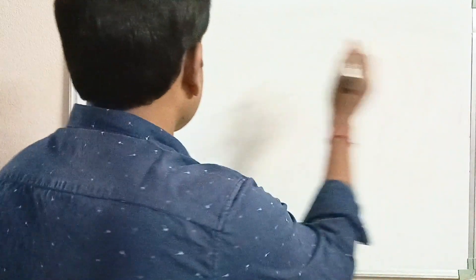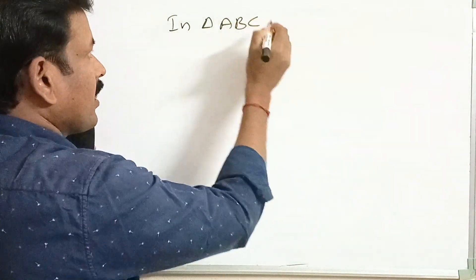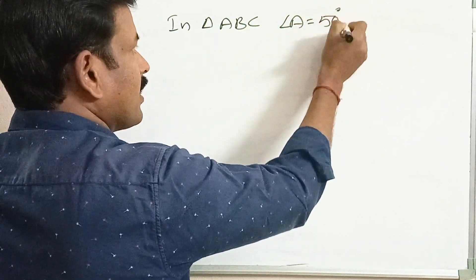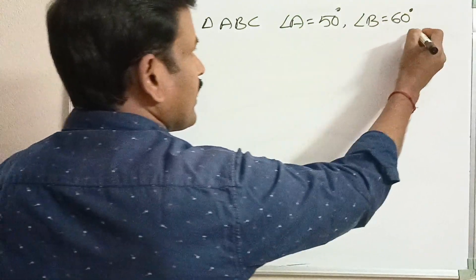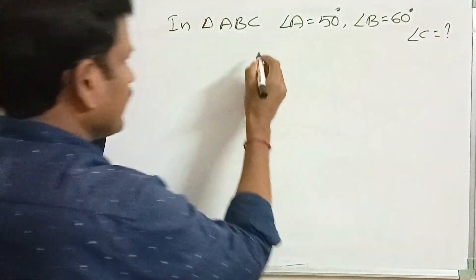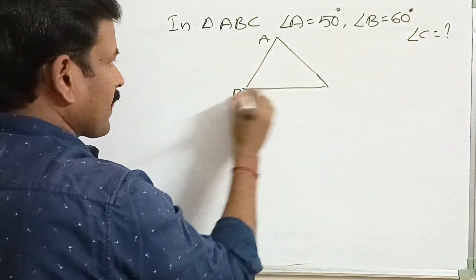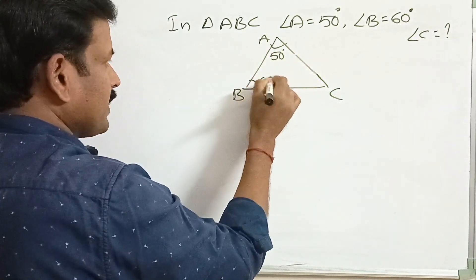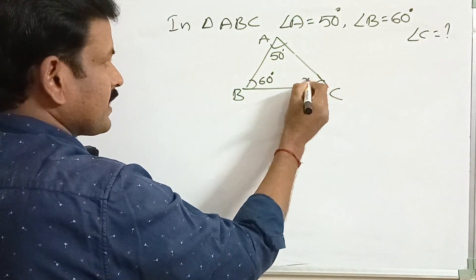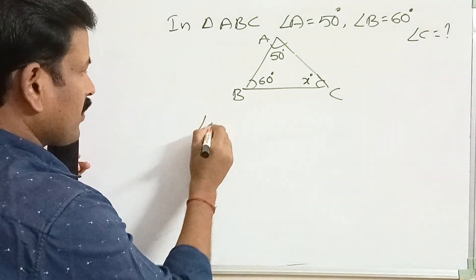Here, in triangle ABC, angle A measures 50 degrees and angle B measures 60 degrees. Then find angle C. In this triangle, observe: angle A is 50 degrees, angle B is 60 degrees. Let angle C be x degrees.